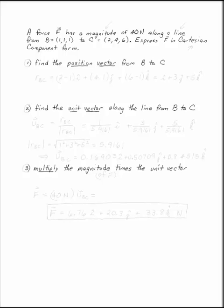To go in three dimensions from magnitude along a line to Cartesian form, there are three steps. One, find the position vector. Two, find the unit vector along that line. And three, multiply the magnitude of F times the unit vector along the line.